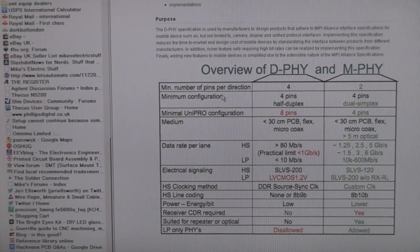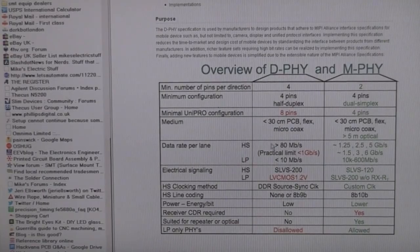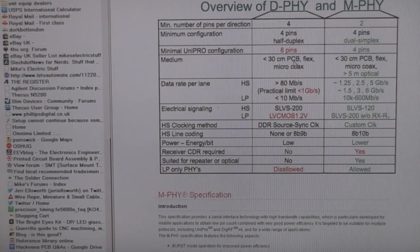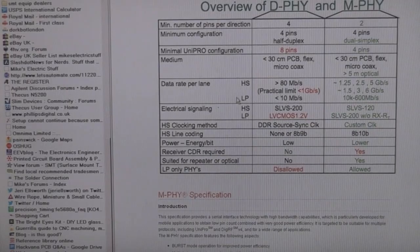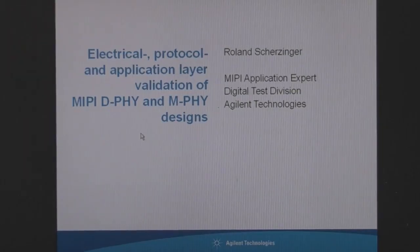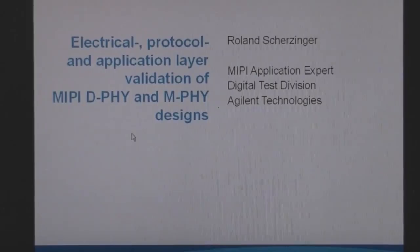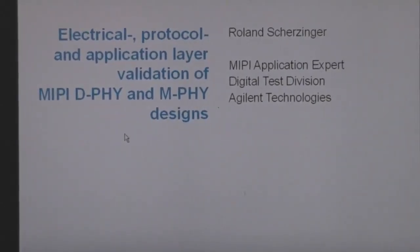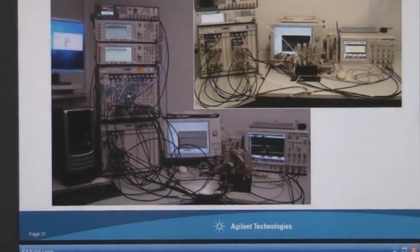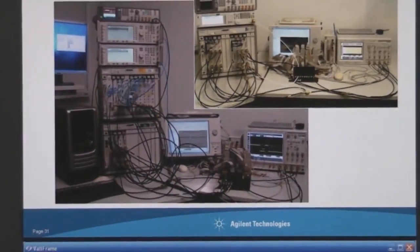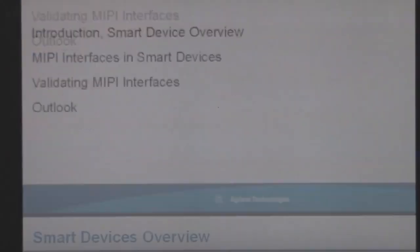There are a few snippets of information on the MIPI website — a very general overview including some D-PHY physical layer details. After quite a lot of Googling with permutations of MIPI, DSI, D-PHY, etc., the most useful thing I found was a set of Agilent presentation slides on test solutions for this interface. Although Agilent sells expensive test setups, the slides contain quite a nice overview with actually quite a lot of useful information.